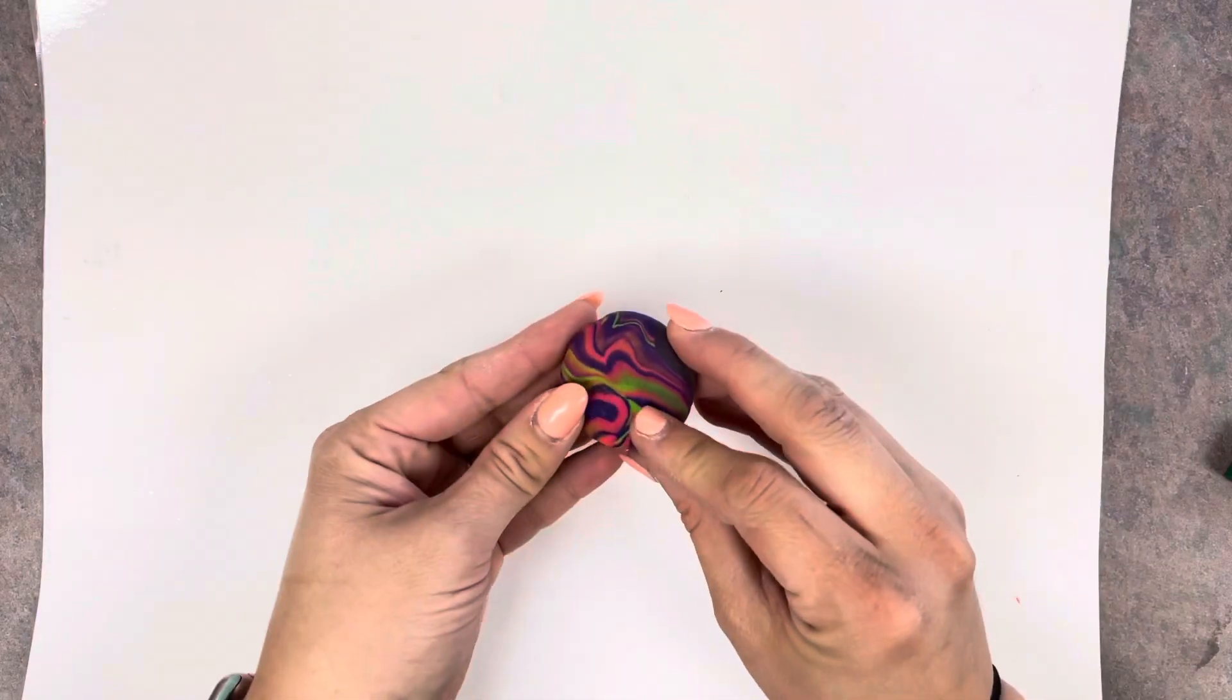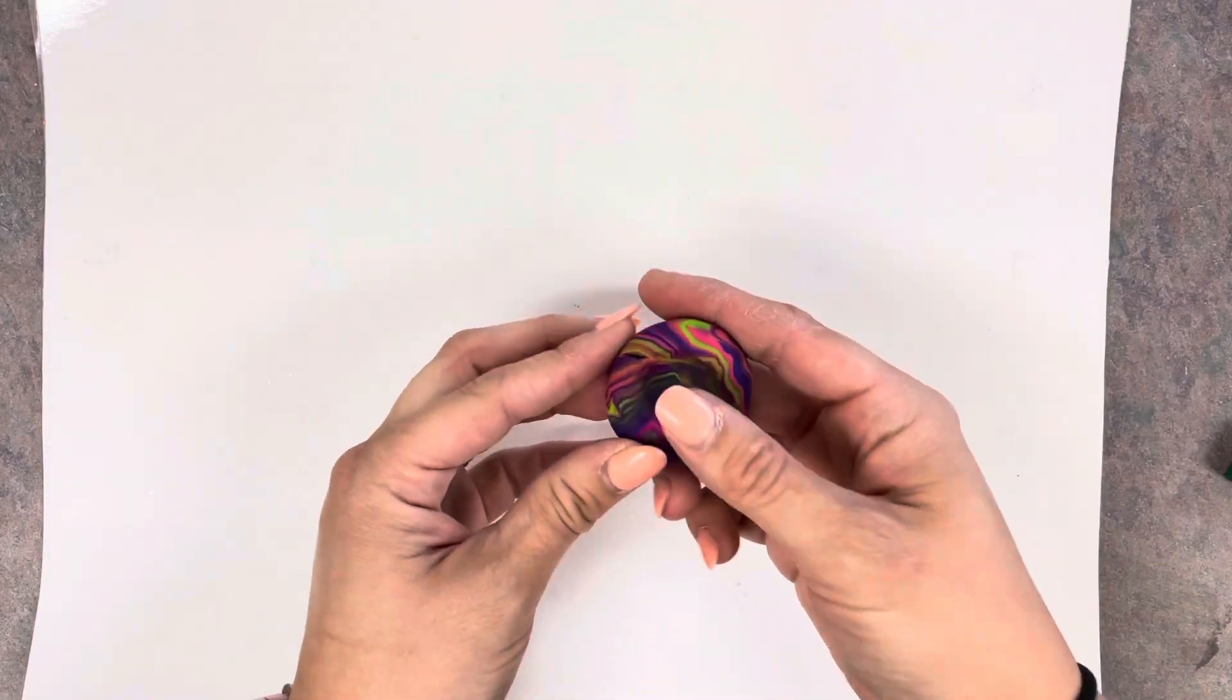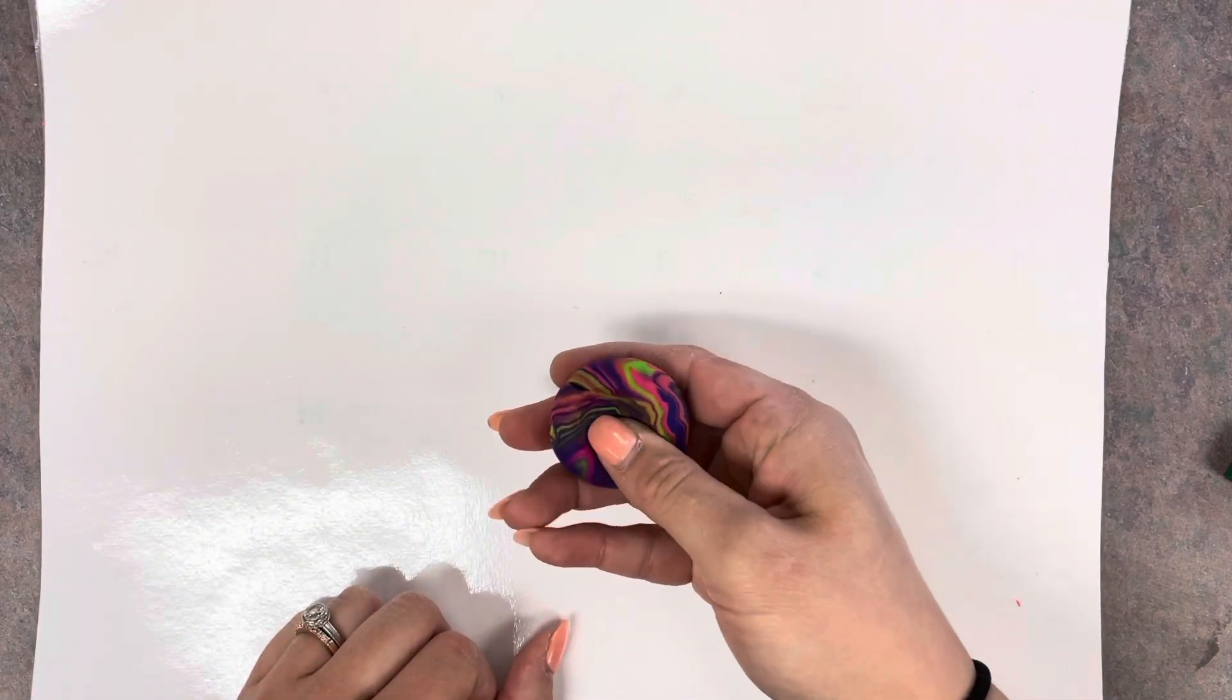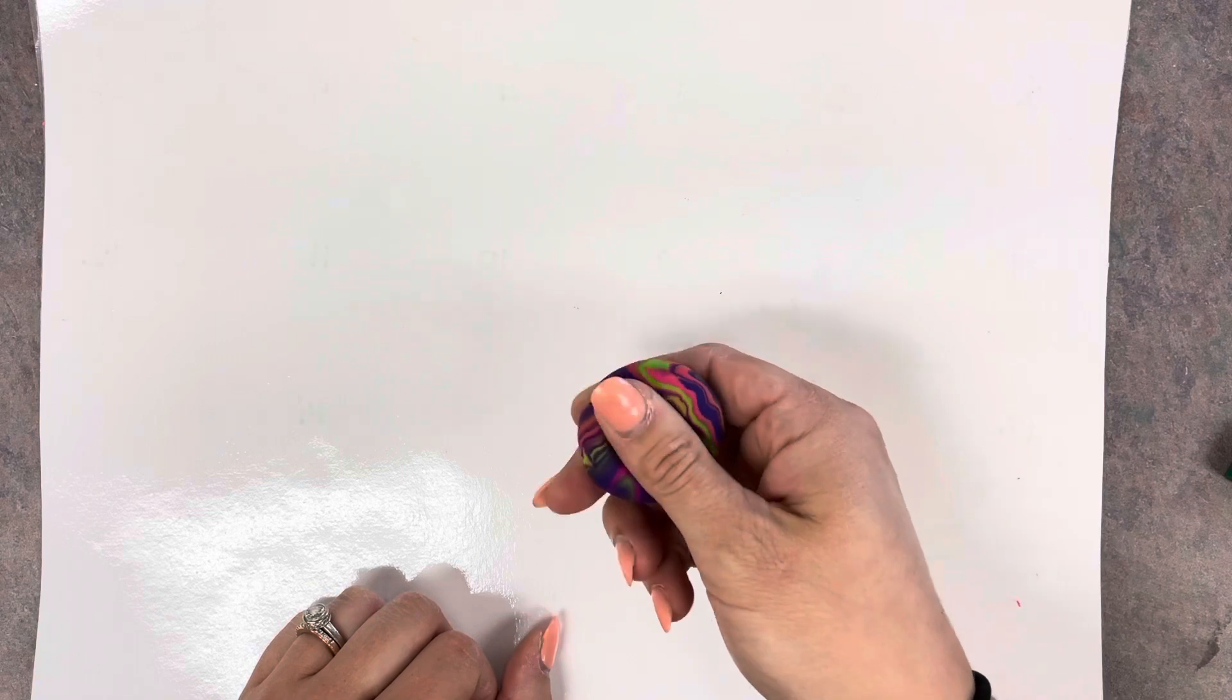Today I'm going to show you how to make worry stones out of polymer clay. Worry stones are little stones with a spot in the middle to rub your thumb, which has a calming effect that will make you feel better.